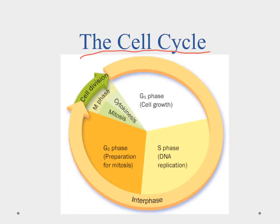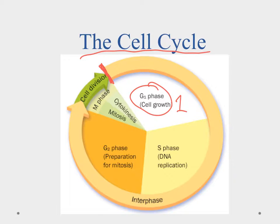Here is our simple model of the cell cycle. It starts when we have a daughter cell that first goes into the G1 phase — G1 for growth. In G1, the cell grows to full size, makes new organelles, and starts its normal functioning. If it's a muscle cell, this is when it acts as a muscle cell; if it's a skin cell, this is when it acts like a skin cell.